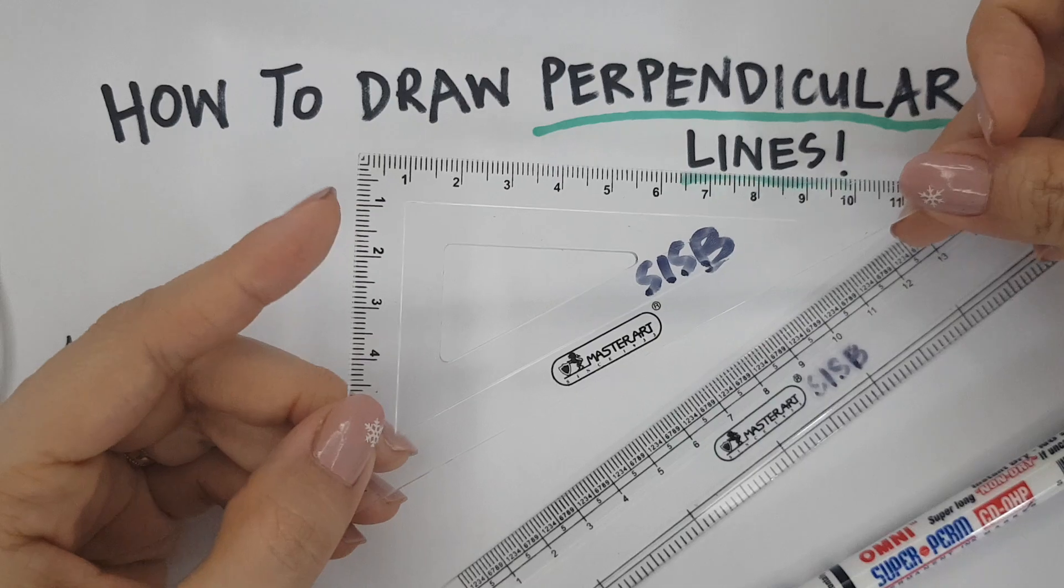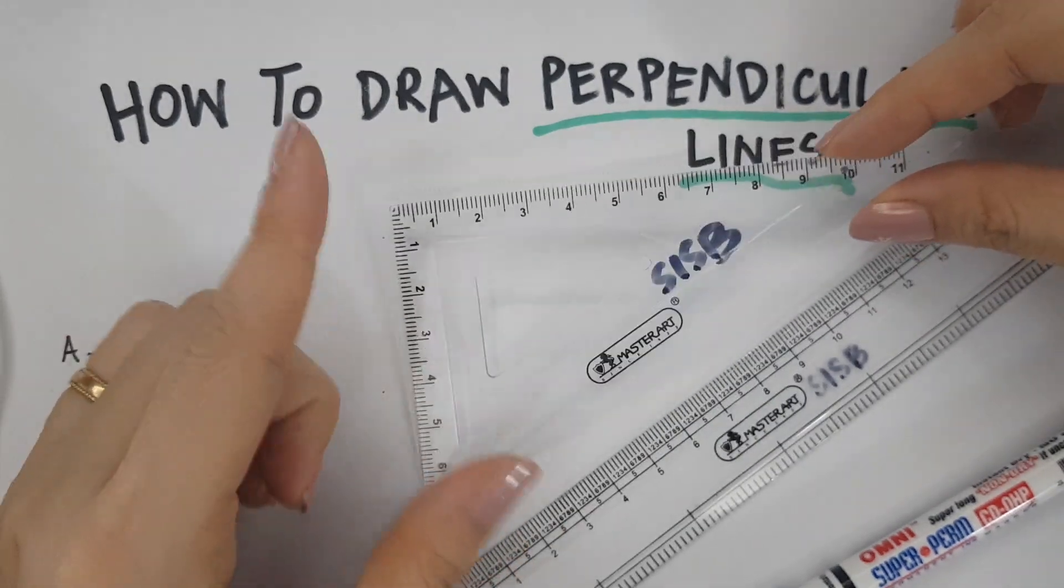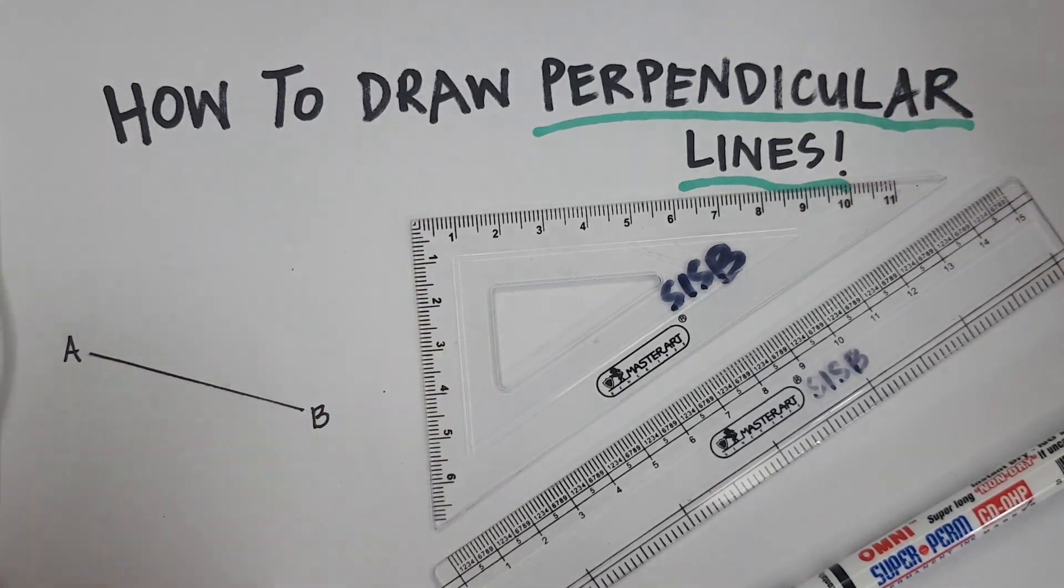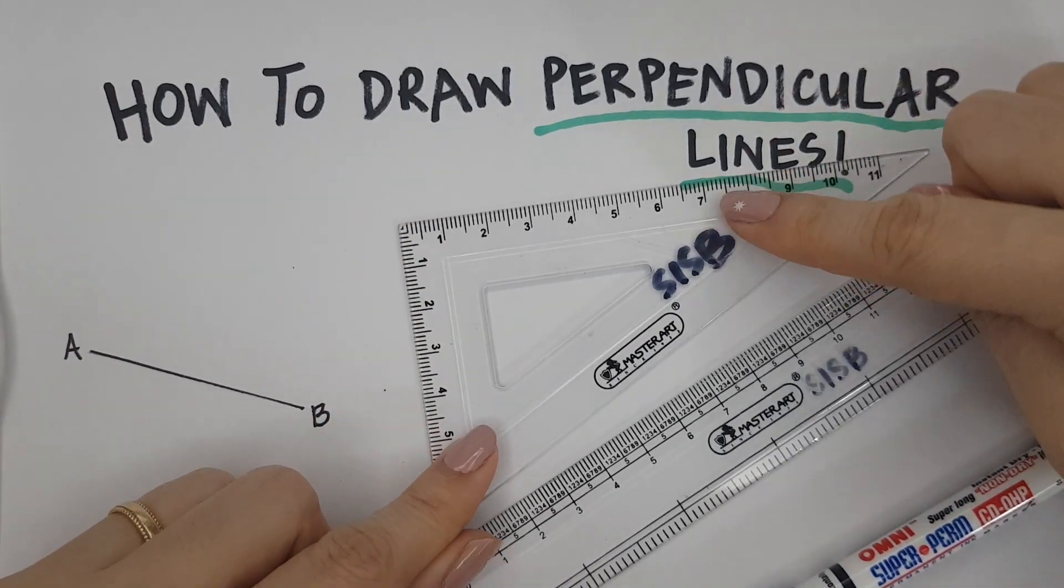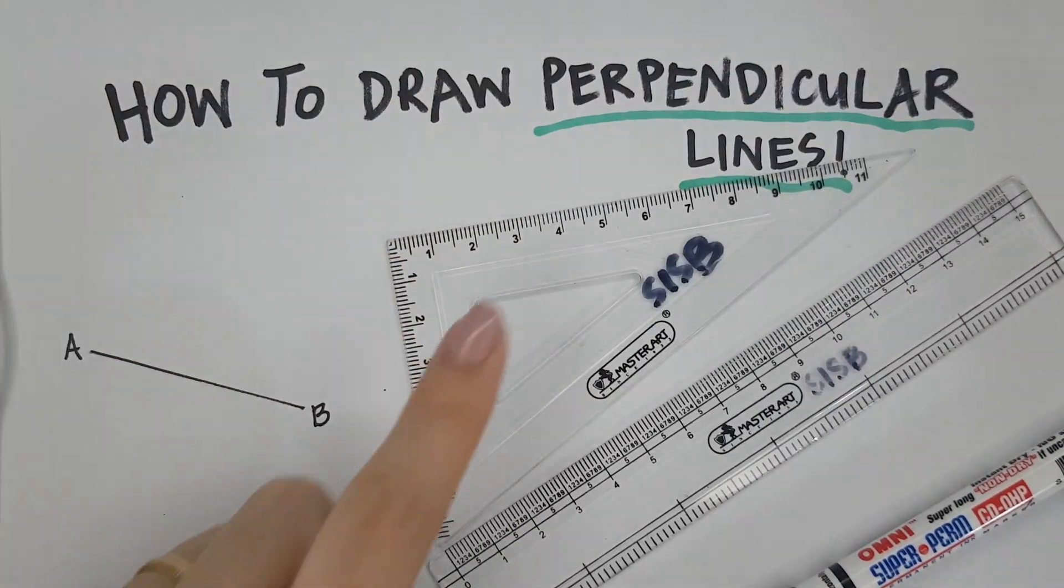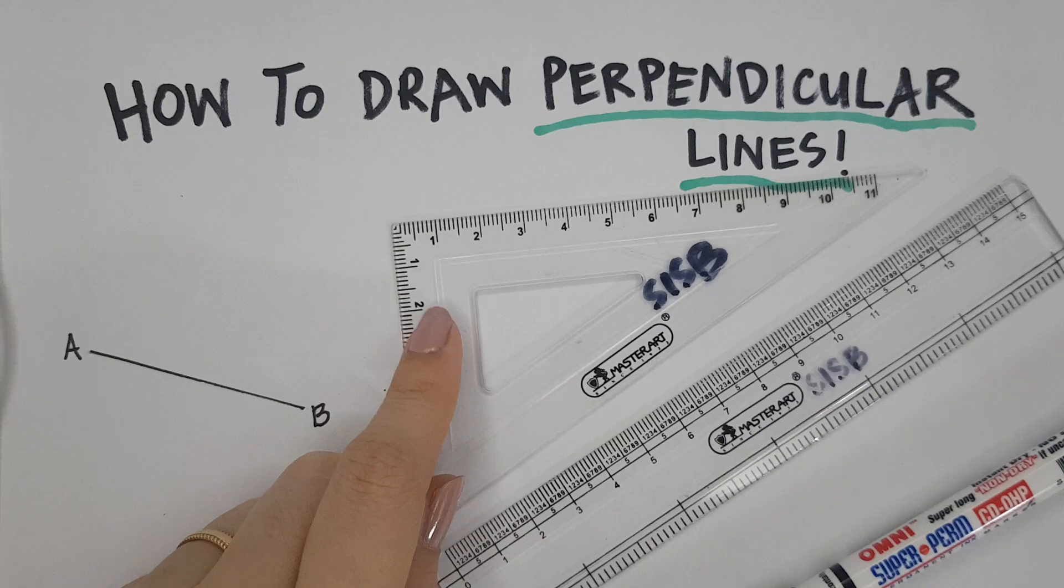I know the name is weird. A set square is this triangular ruler that you need. I will show you how to draw a perpendicular line if you do not have this ruler. It is also fine to use two normal rulers, but first let me show you with this set square ruler.